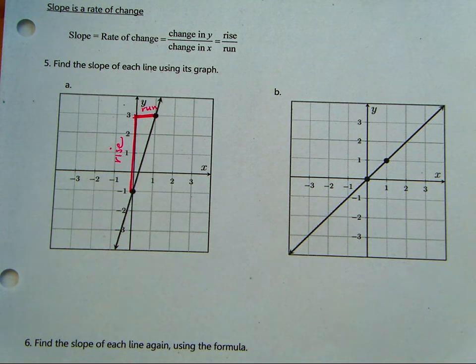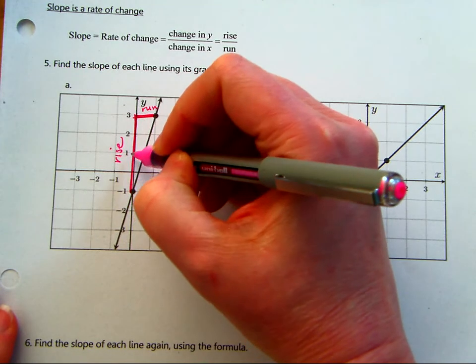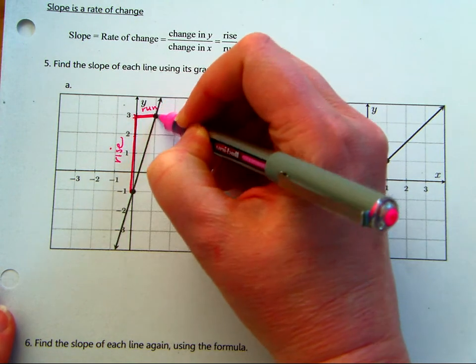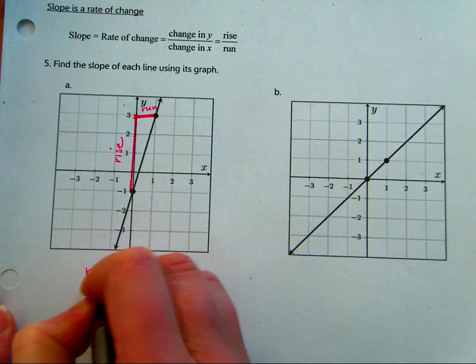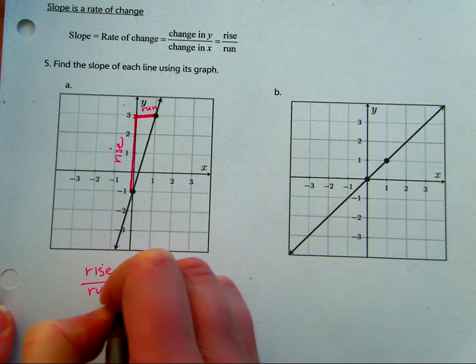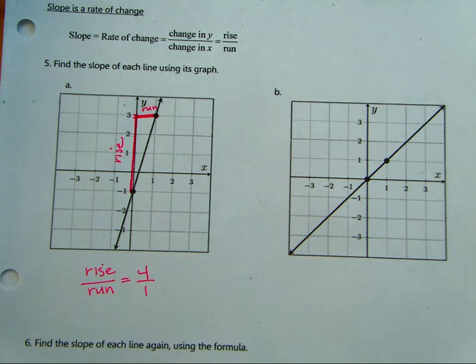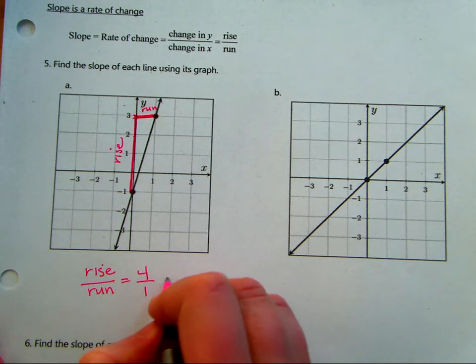Up over one? Yes. So up one, two, three, four, over one. So I'm going to write rise over run equals four over one. Which is four.